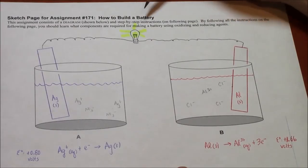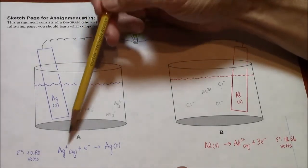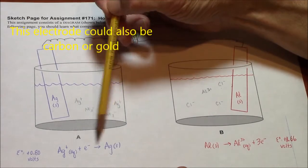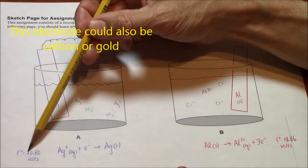This is what your diagram should look like. Silver electrode, silver ion on the left. So you can do this half reaction, the reduction of silver ion. 0.80 volts positive.